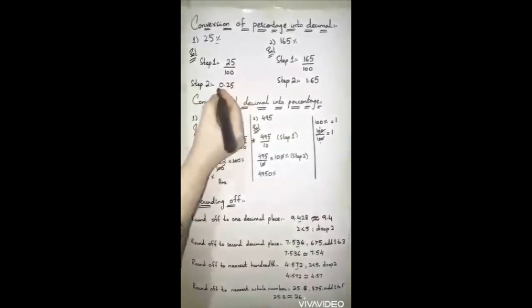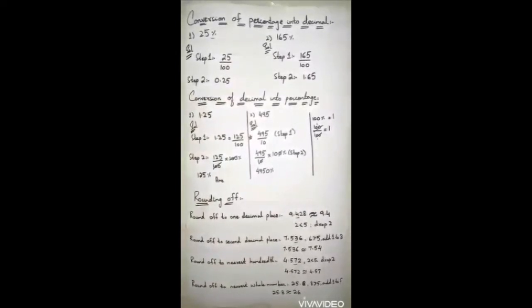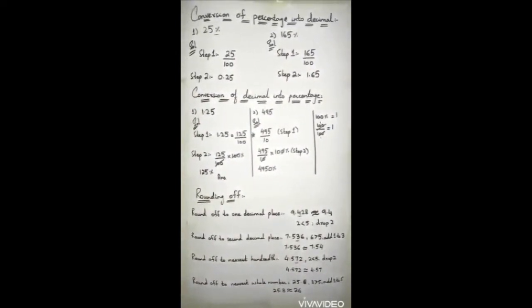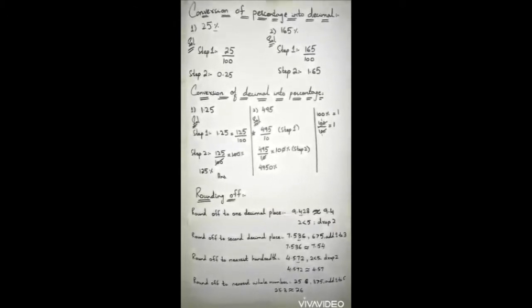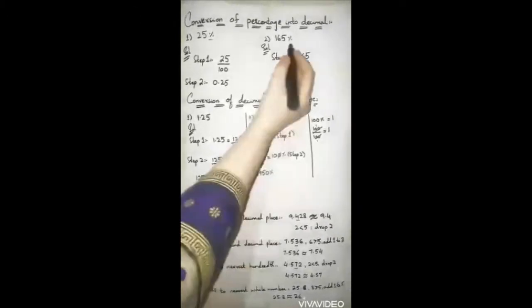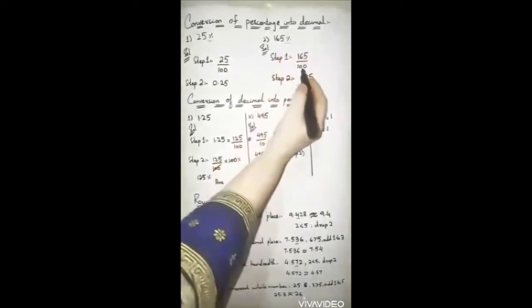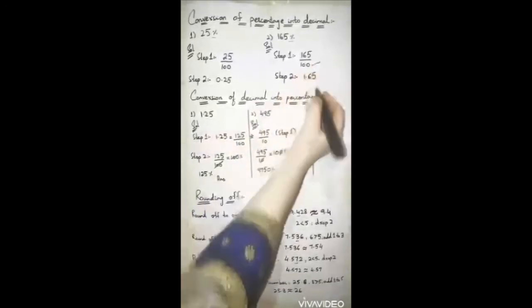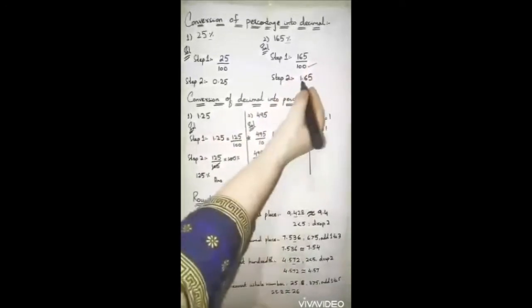If you want to remove the percentage sign, you write 100 as the denominator. To convert the fractional number into a decimal, if you have two zeros in the denominator, you place the decimal point before two numbers. Since there are no digits before the two numbers, you put zero there — giving 0.25. For example number two, 165%: step one is 165 upon 100, and step two gives 1.65, placing the decimal point before two digits.